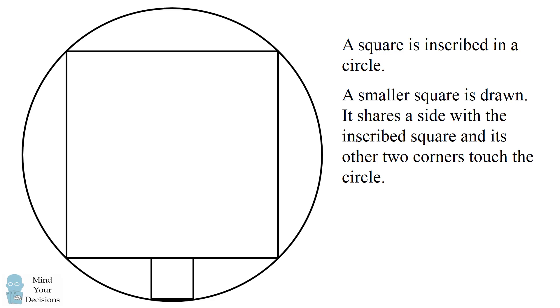A smaller square is drawn. The smaller square shares a side with the inscribed square and its other two corners touch the circle. What is the ratio of the large square's area to the small square's area?